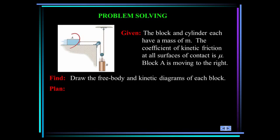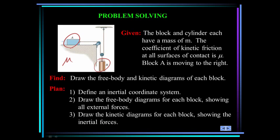Here's another problem. We have a block of mass m and a cylinder of mass m. And the coefficient of kinetic friction at all contact surfaces is mu. Draw the free body and kinetic diagrams of each block. What's our plan?